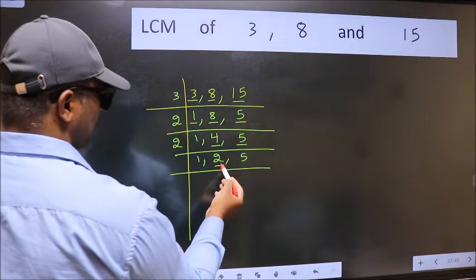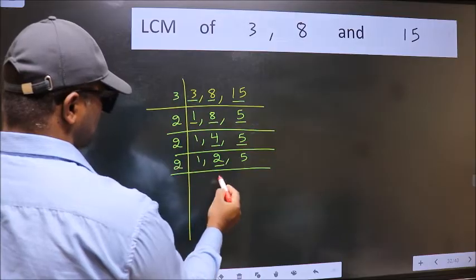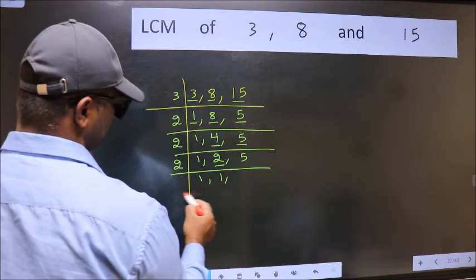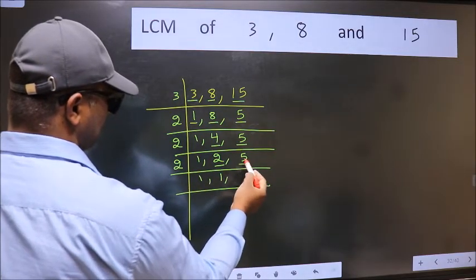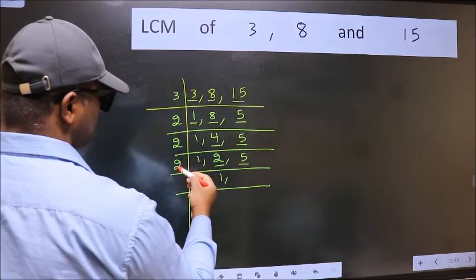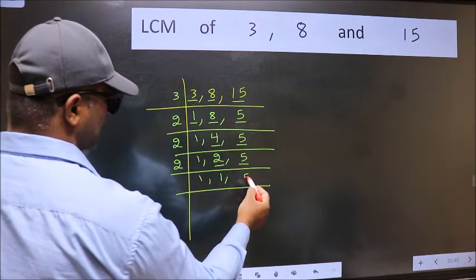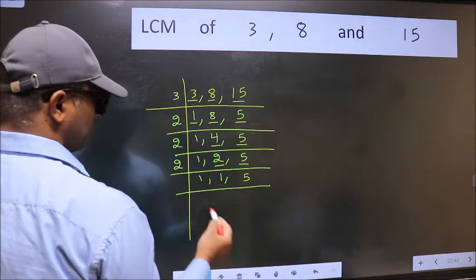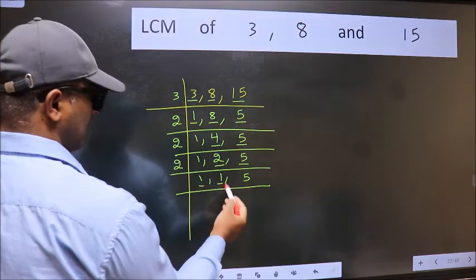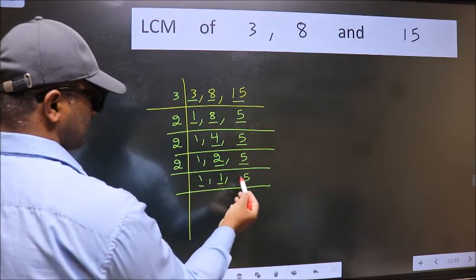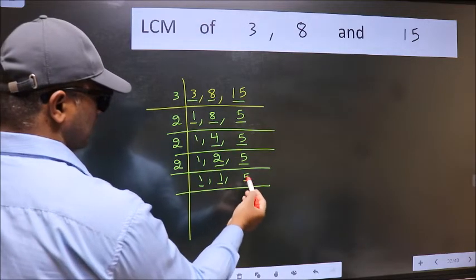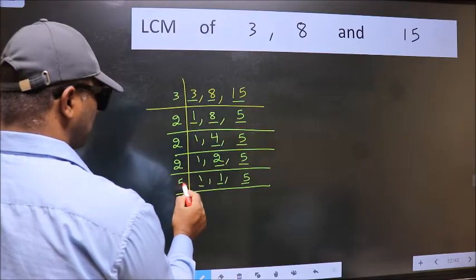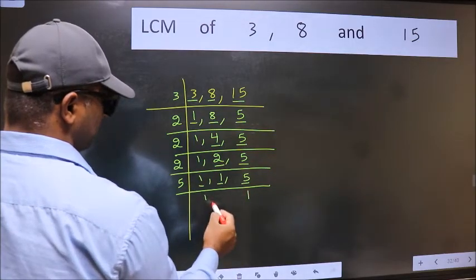Now here we have 2. 2 is a prime number, so 2 divides 2. The other number, 5, is not divisible by 2, so we write it down as it is. Now we got 1 here and here. So focus on the next number, 5. 5 is a prime number, so 5 divides 5.